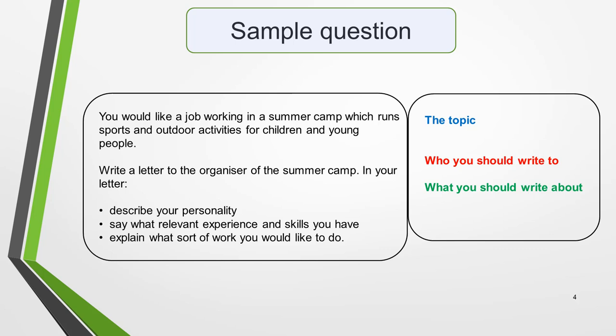The first sentence gives the topic of the question, which is that you want a job working in the summer camp. The second sentence tells you who you should write the letter to. And the three bullet points tell you what you should write about: describe your personality, say what relevant experience and skills you have, and explain what sort of work you'd like to do.